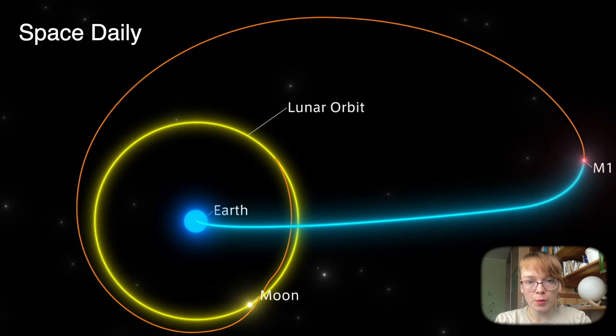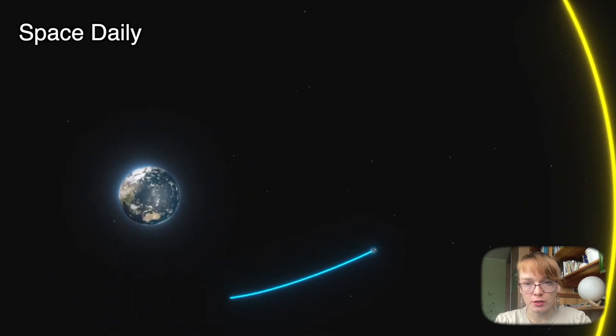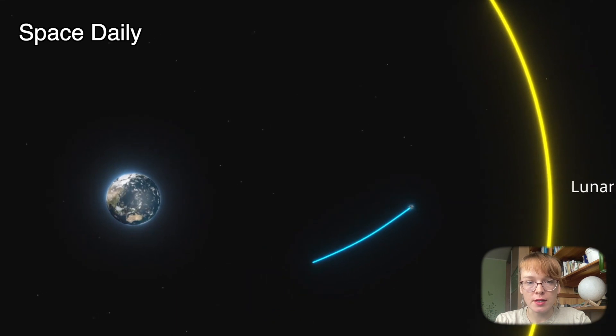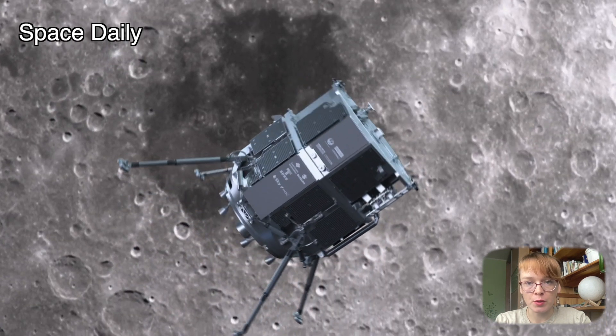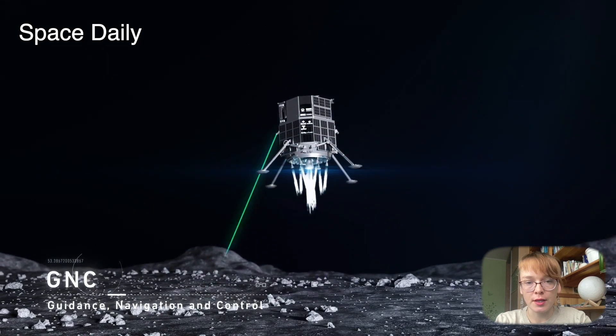Entering the lunar orbit in the seventh of ten phases iSpace has outlined for the mission. The last three phases are completing orbit adjustment maneuvers, landing, and transitioning to a steady operating state after landing.